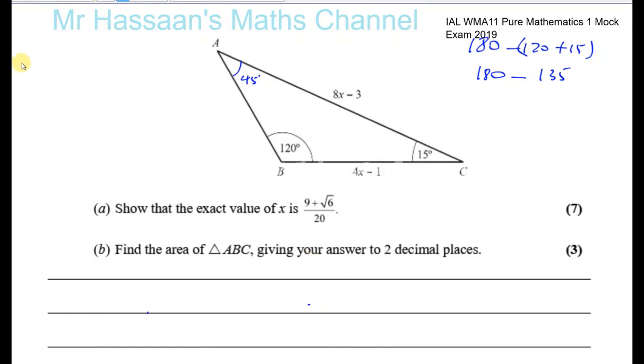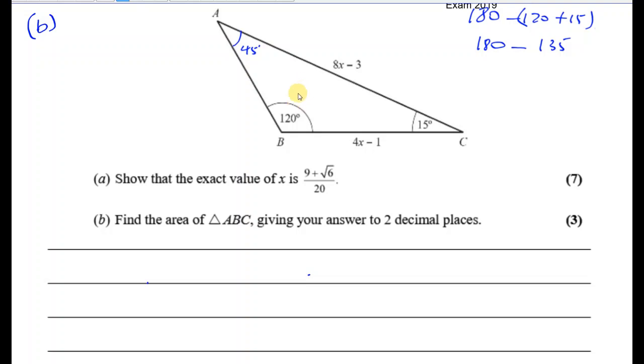And for now, for part B. In fact, part B is a question where you didn't actually have to know how to do part A. Supposing you didn't get 9 plus root 6 over 20, well, they've told you what it is. And they're asking us here to find the area of the triangle ABC, giving your answer to two decimal places. So we know that the area of a triangle, when we don't know the vertical height, is given by a half AB sine C, where A and B are two sides that make the angle C that we know. So in this case, this has to be the angle because we know the two sides here that make it. We can't use 45, nor can we use 120 because we don't know this side. So the only option for us is to use this angle and these two sides as our angle and our sides.